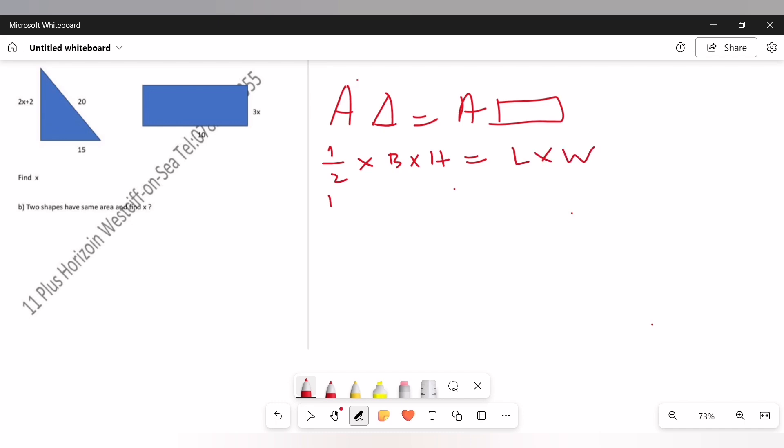The base is given as 15 and the height is given as 2x plus 2. The length is given here as 10, and the width is given as 3x. So we have 15 times (2x plus 2) divided by 2 equals 10 times 3x, which is 30x.